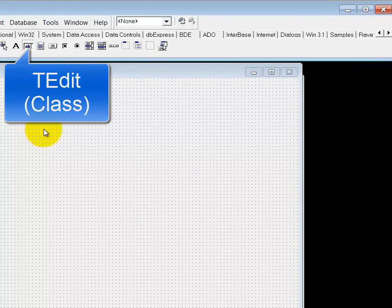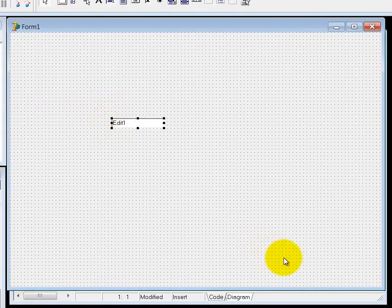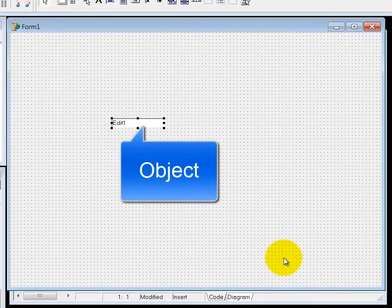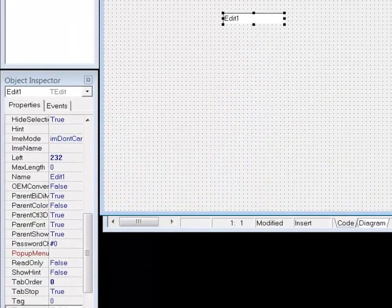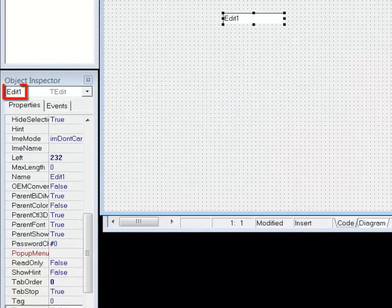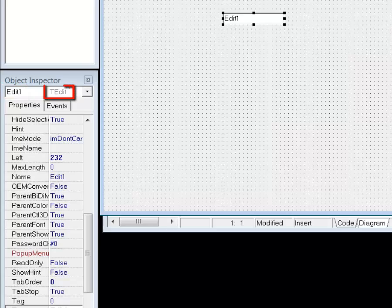I then move my mouse pointer to the form and click where I want to place the edit. There, I just created an edit object from the TEdit class. If you look at the combo box at the top of the object inspector, you can see that this edit object is called edit1. But next to the name you can also see that edit1 was created or instantiated from a class called TEdit.